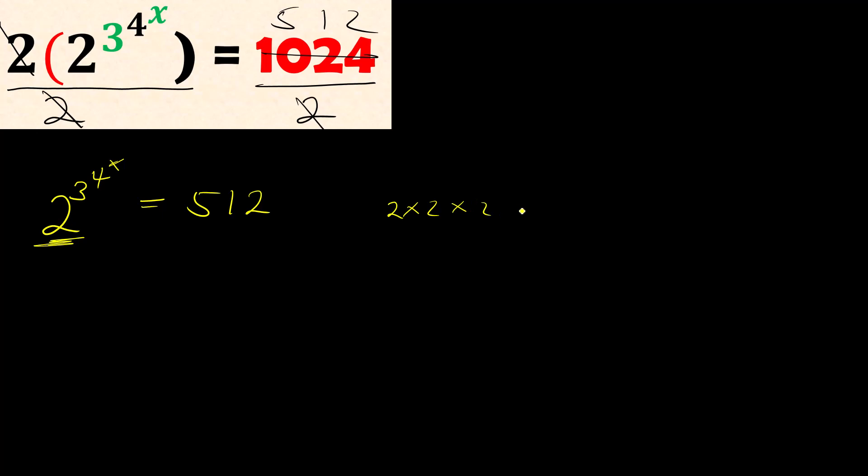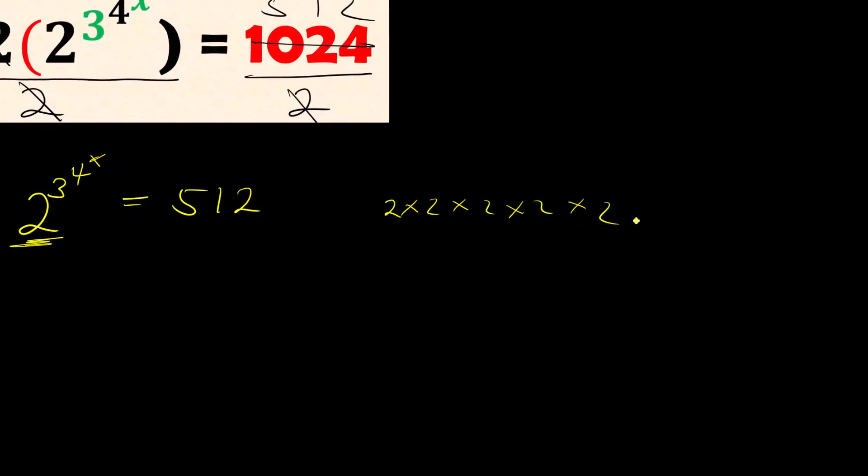...times 2 is 256, times 2 is 512. That's 1, 2, 3, 4, 5, 6, 7, 8, 9 multiplications. So 2^9 equals 512. The next step is to equate the exponents.